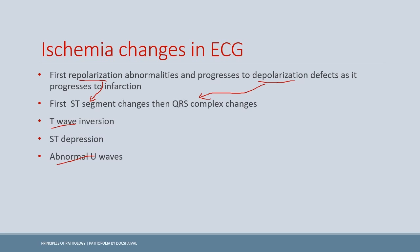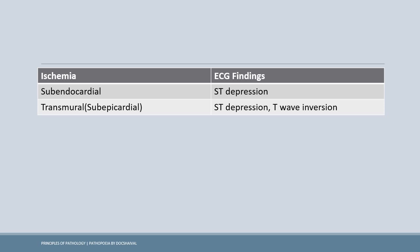Here is a summary table: subendocardial ischemia leads to ST depression, while transmural ischemia leads to T wave inversion. Bear in mind that if transmural ischemia converts to infarction — STEMI — ST elevation appears. Transmural ischemia is associated with ST depression and T wave inversion; when it progresses to infarction, ST elevation develops.